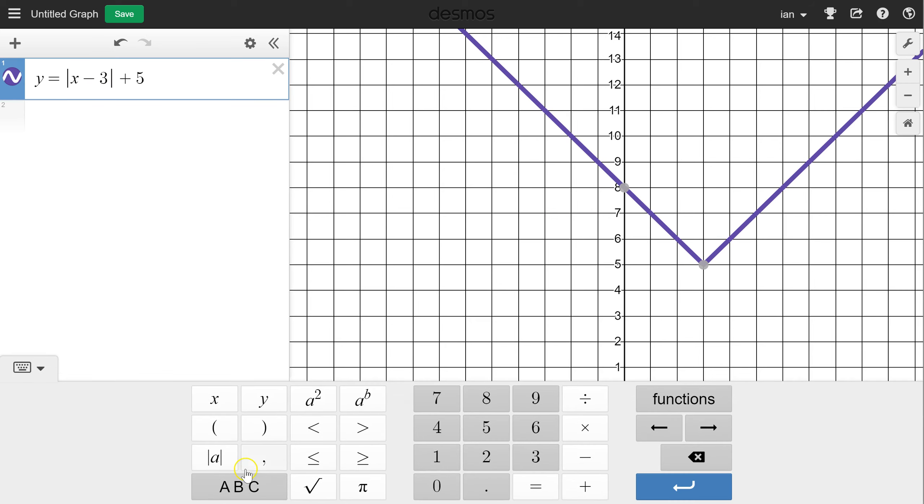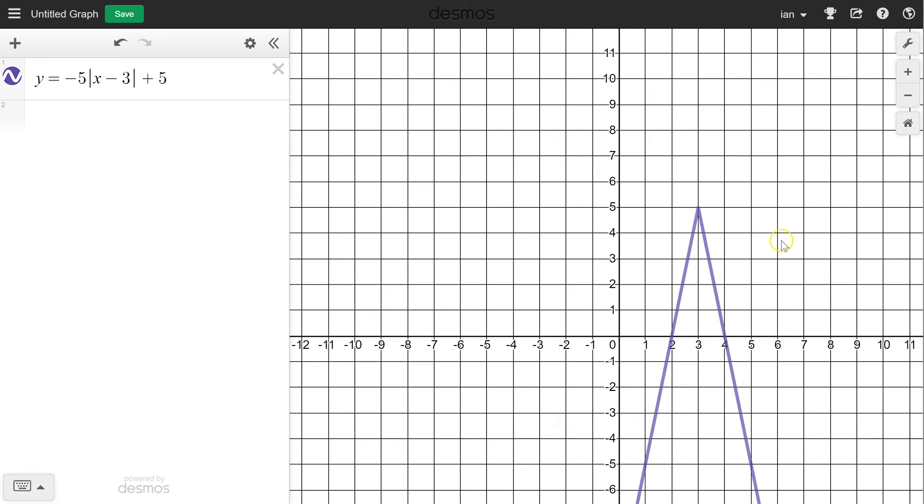So if I were to put a 2 there, it's still the same shape. If I put a negative 5, it's still the same shape, it's just heading down now.